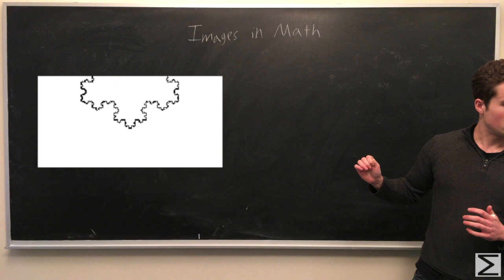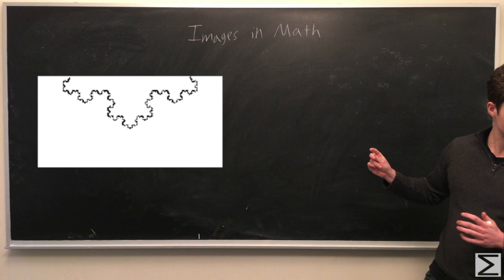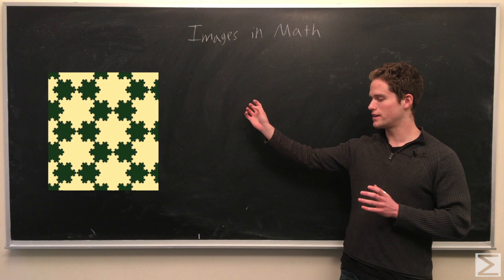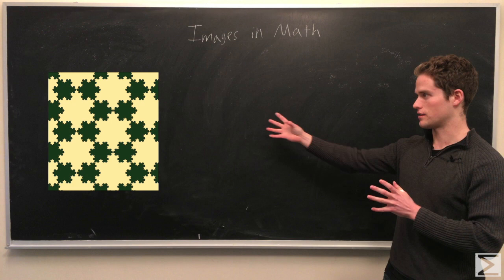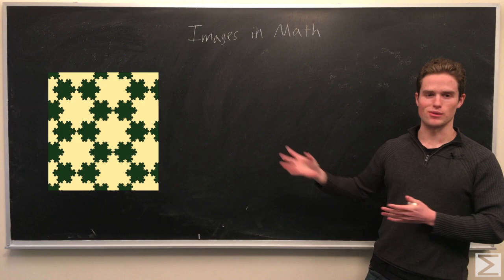So one other neat property of the snowflake is, now this image, if you set up kind of three big ones and a bunch of little Koch snowflakes around each other you can get a tiling of the entire plane with the snowflakes. And so yeah, that's one other thing we can do with this snowflake.